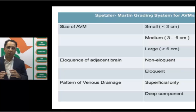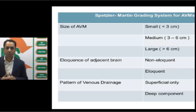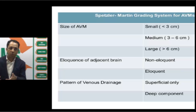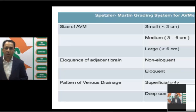There is the Spetzler-Martin grading system for AVM, based on size — less than 3 cm, 3 to 6 cm, or more than 6 cm. It also depends on the eloquence of the adjacent brain: if it is in non-eloquent brain such as the frontal or temporal lobe it scores lower, while eloquent areas like the speech, visual, or sensory-motor areas score higher. A superficial location scores zero while deep venous drainage scores higher.